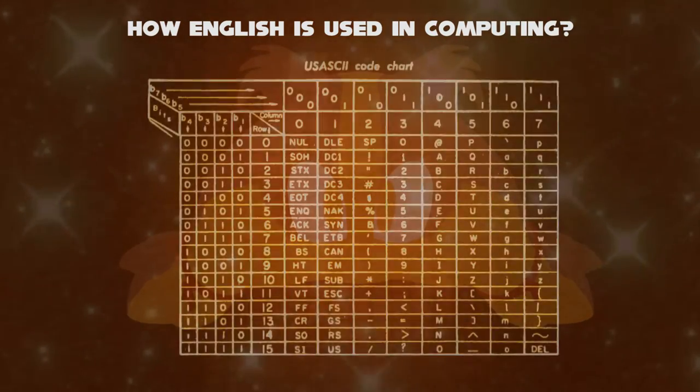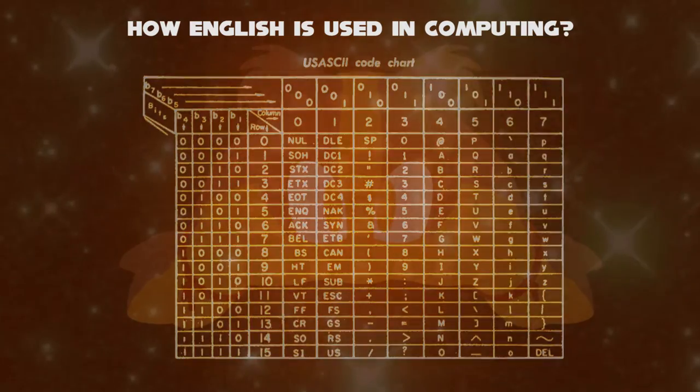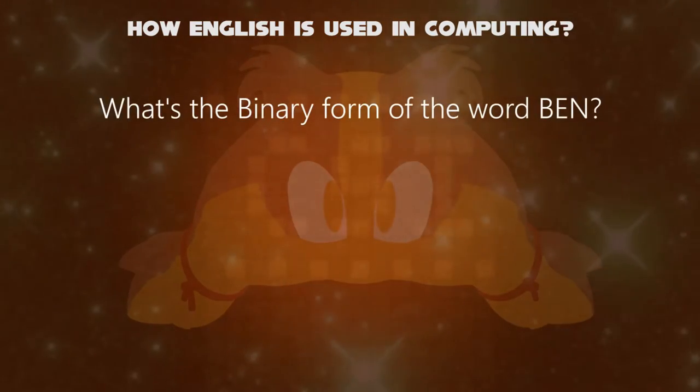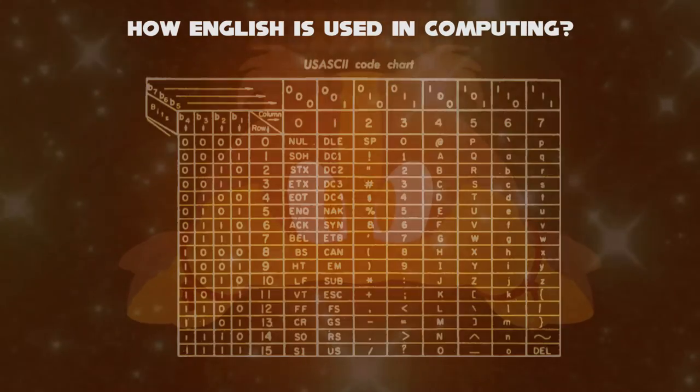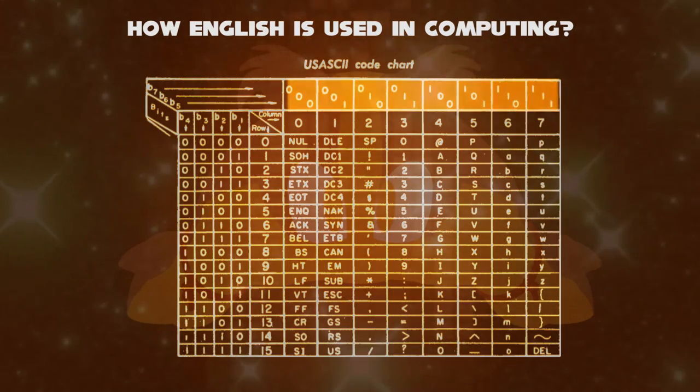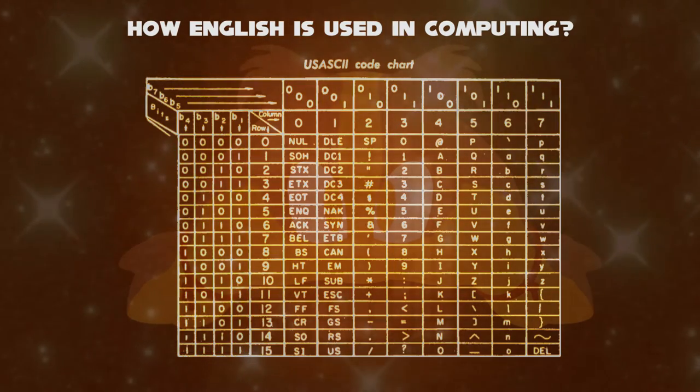Just refer to this chart I have shown in this video. If your name is Ben, then what's the binary form? The readout comes in the column first, and the row second. You took my name Ben, right? Yeah, I know.